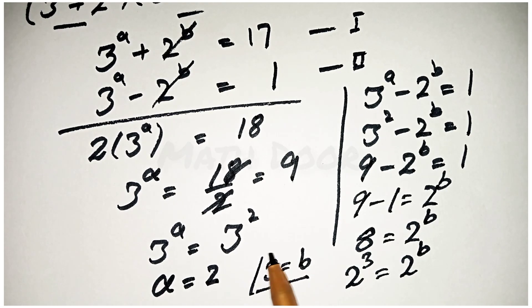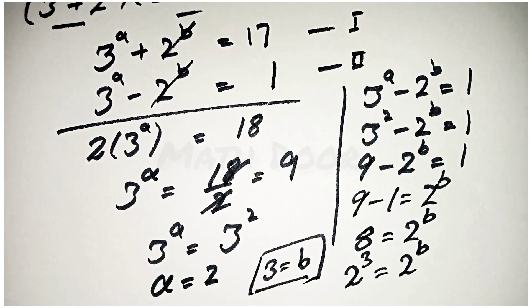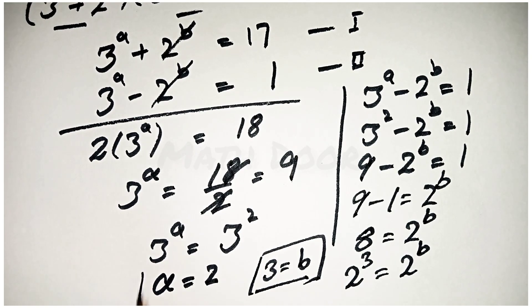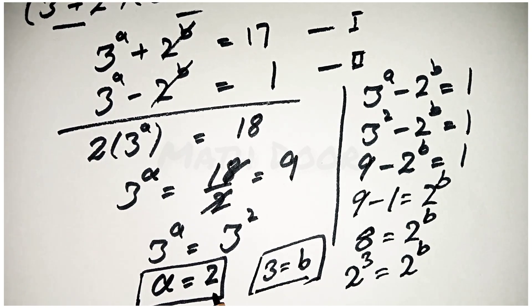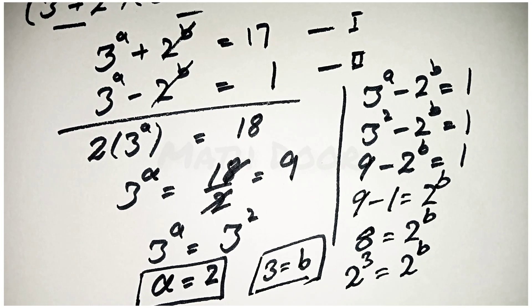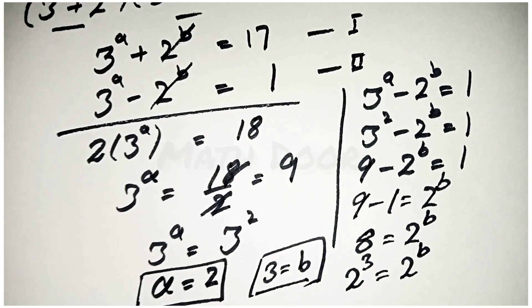The value of b is equal to 3 and the value of a is equal to 2. Don't forget to subscribe to my YouTube channel to watch more videos like this. Thanks for watching.